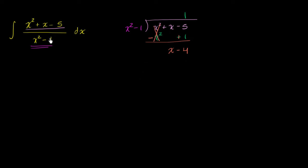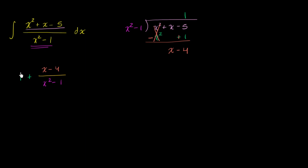We have x minus four left over, so we can rewrite the expression we're trying to find the antiderivative of as one plus x minus four over x squared minus one. Now we have a lower degree in the numerator than in the denominator. But what do we do next? If we look at x squared minus one, its derivative would be two x, which is the same degree but it's not x minus four, so u-substitution is not going to help us here.